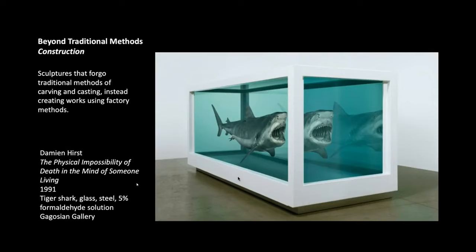Then we have construction. These sculptures forgo all traditional methods of carving and casting. Instead, they create works using factory methods — engineering, a lot of technology, and scientific know-how. Damien Hirst is a contemporary artist very well known for these types of constructions within galleries. A lot of them are kind of strange and make us think about things that seem impossible. This work is called The Physical Impossibility of Death in the Mind of Someone Living. He was very interested in conceptual ideas and making us feel something — confusion or unease around his works.